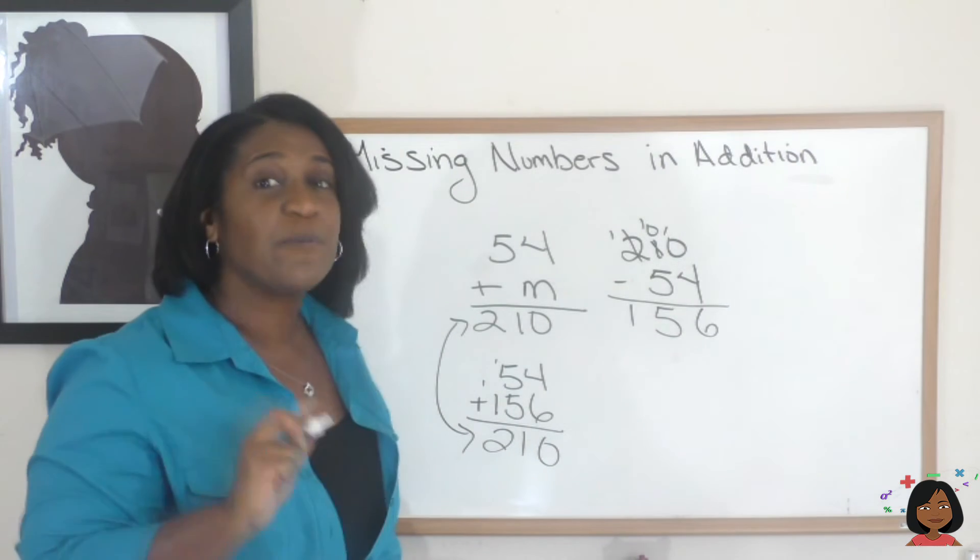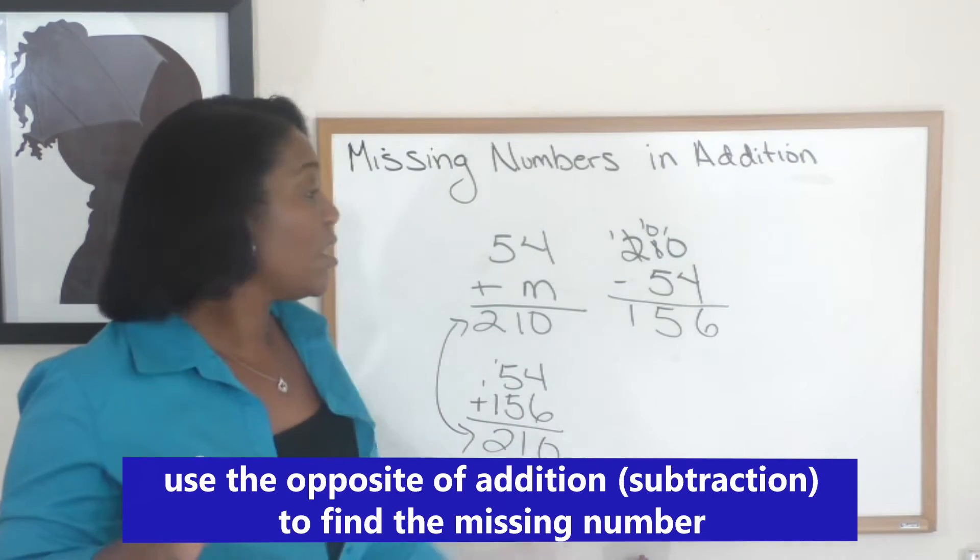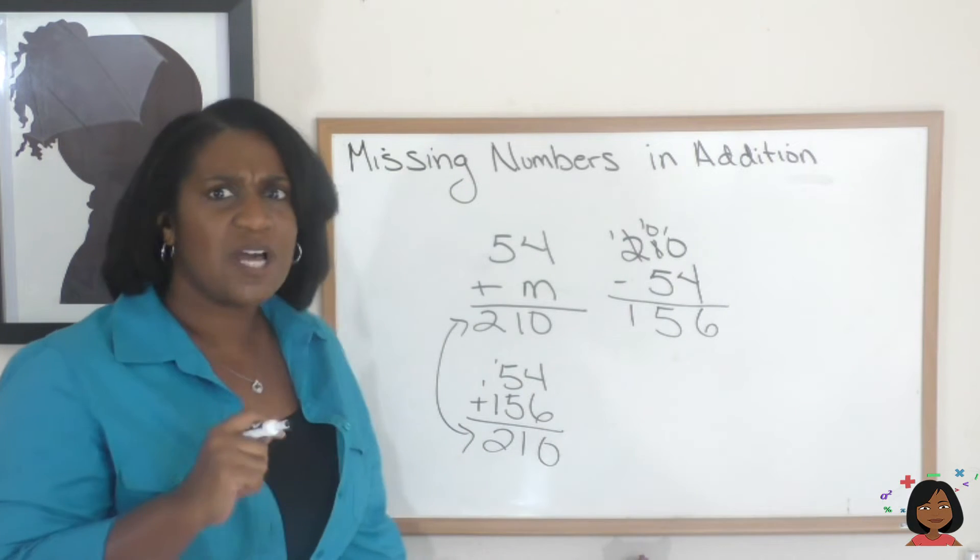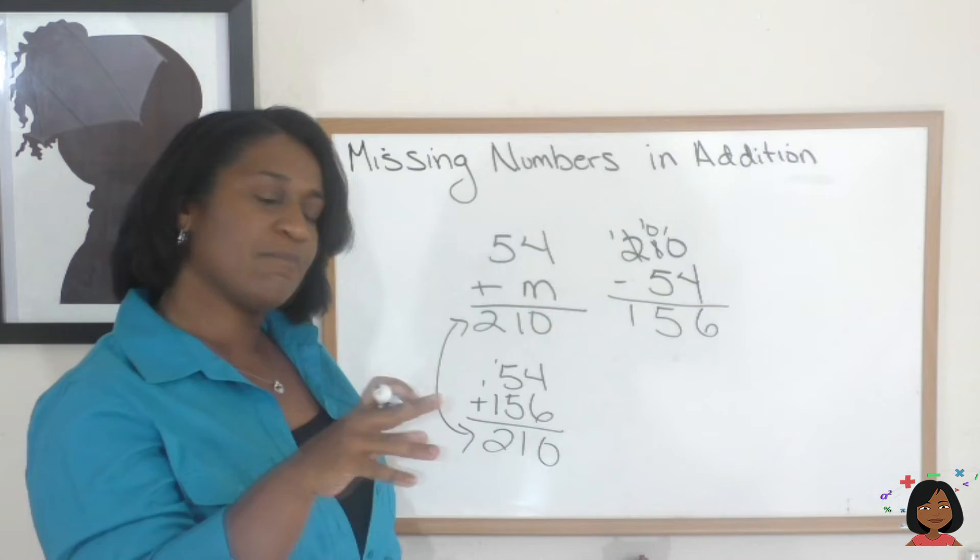210 is the answer both times. So we can use the opposite of addition, subtraction, to help us find missing numbers in addition. Let me give you another example, one that's maybe a little bit more complex.